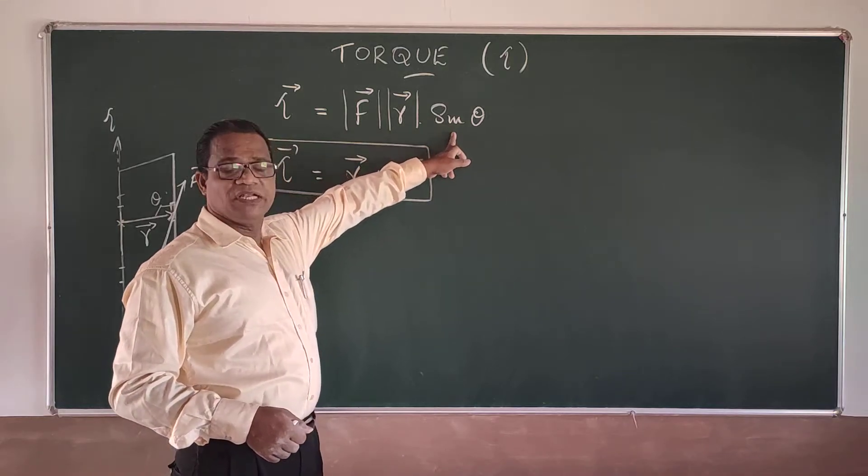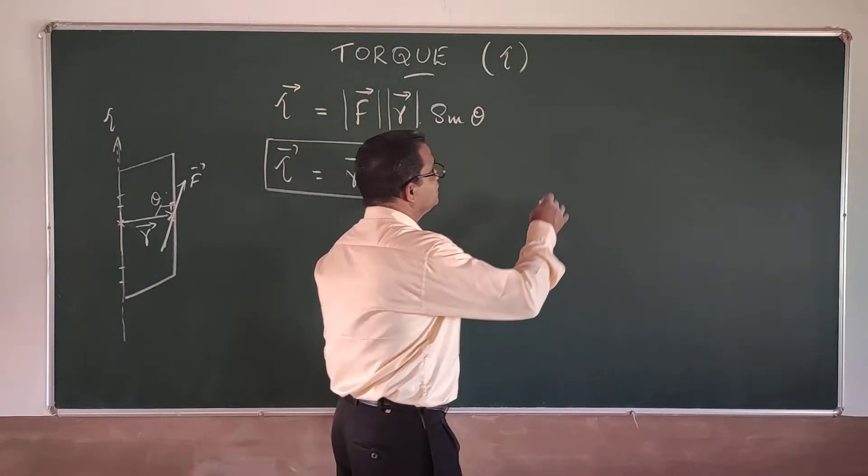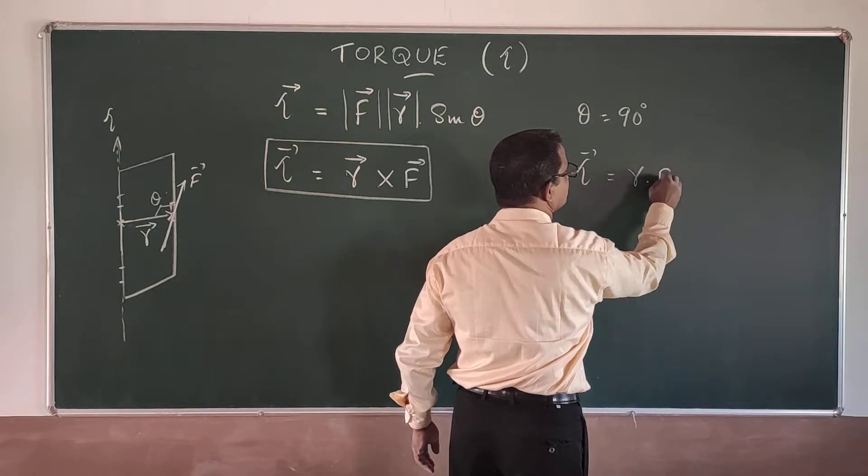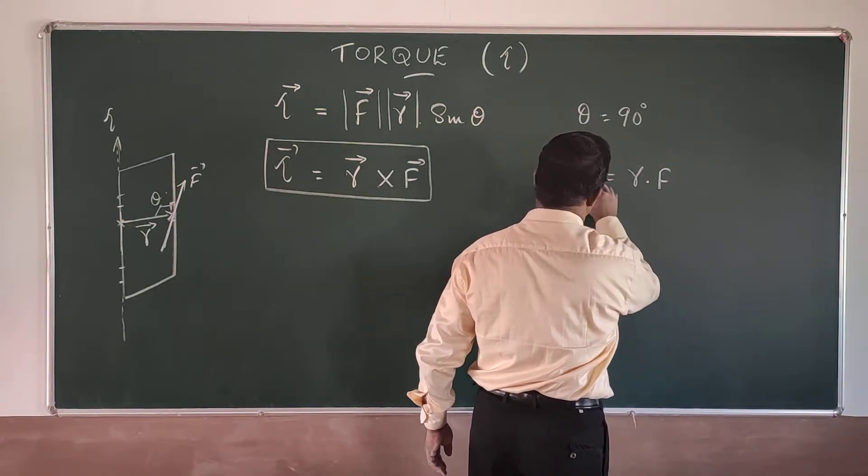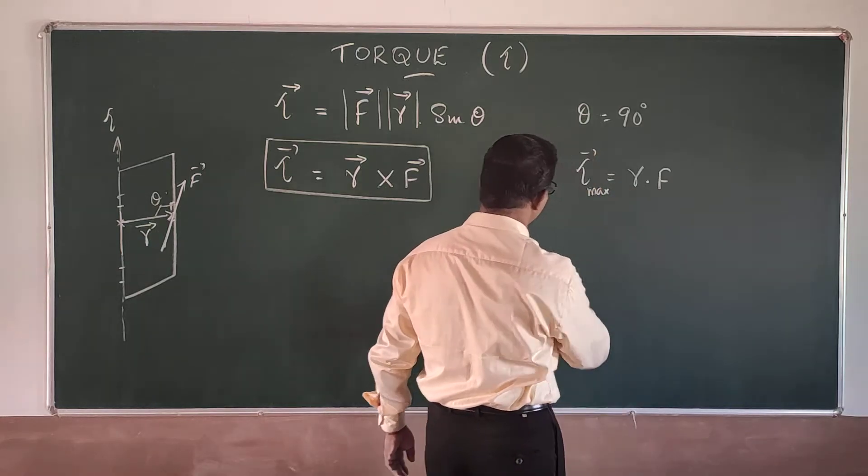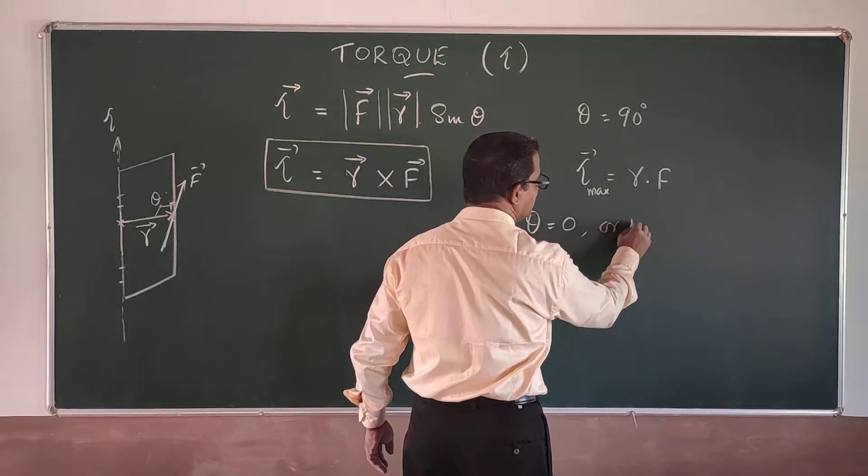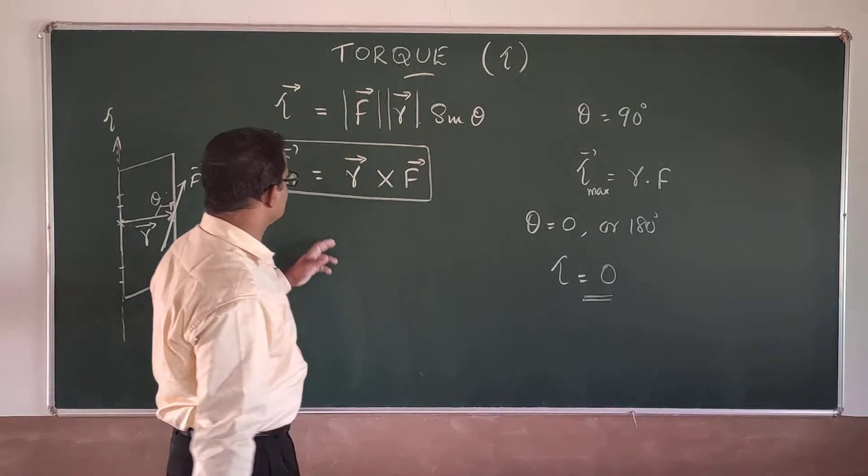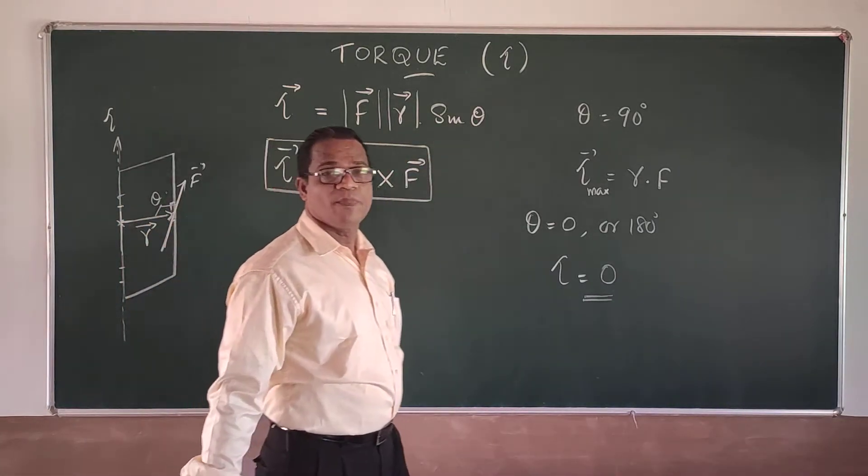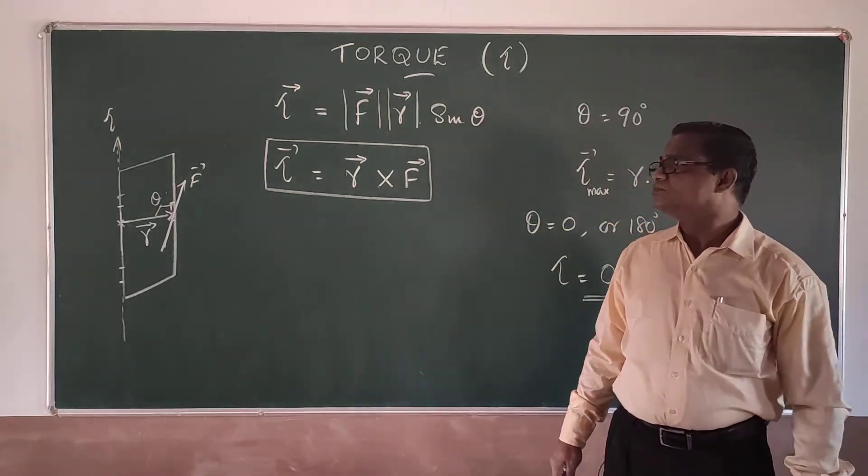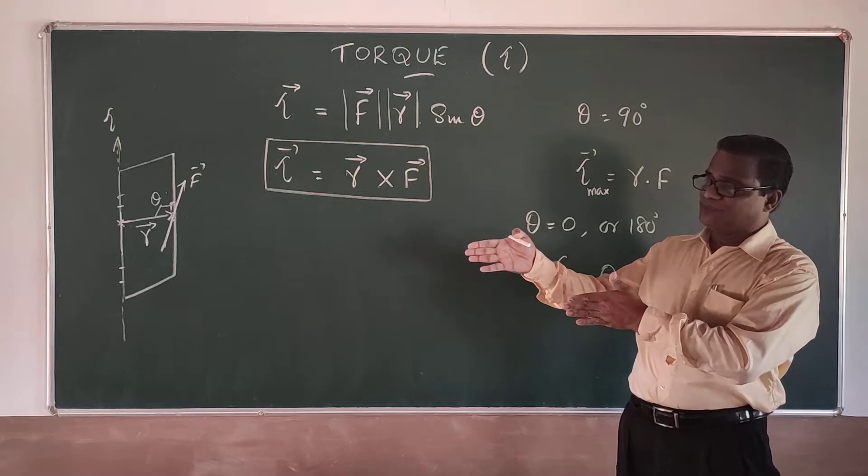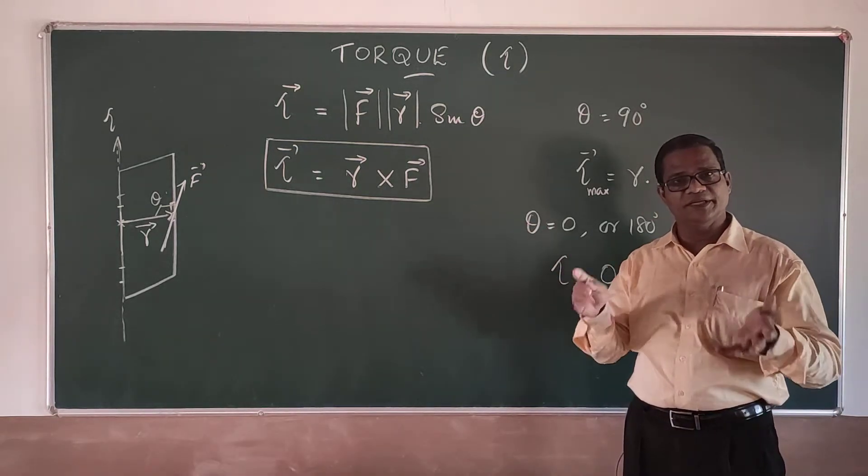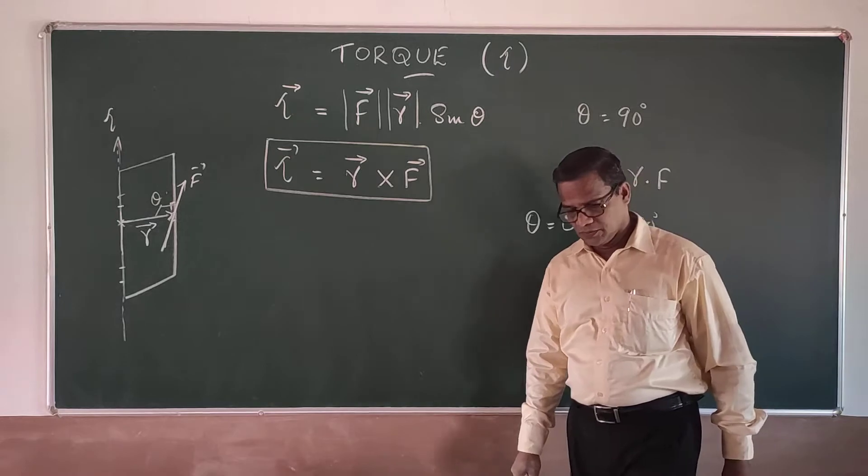When theta becomes 0 or 180, here when theta is equal to 90 degrees, the torque will be equal to R into F, that is maximum. But when theta is equal to 0 or 180 degrees, you can see that torque will be equal to 0 because sin 0 or sin 180 is found to be 0. That is why when you apply the force parallel to the plane of the door, the door is not opening or closing because the torque is not coming. Understood?